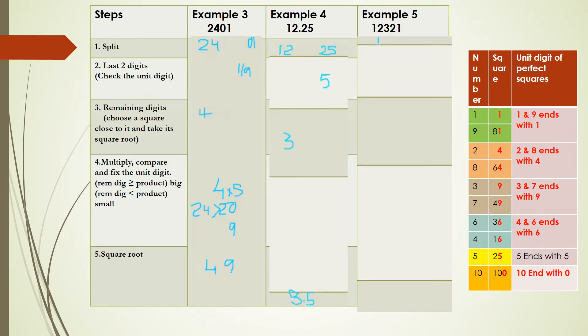It's a 5-digit number. By splitting, 123 belongs to the remaining digits group and 21 is the last two digits. Check the unit digit: it can be 1 or 9. Since 123 is more than 100, you should know the squares from 11 to 20 here.